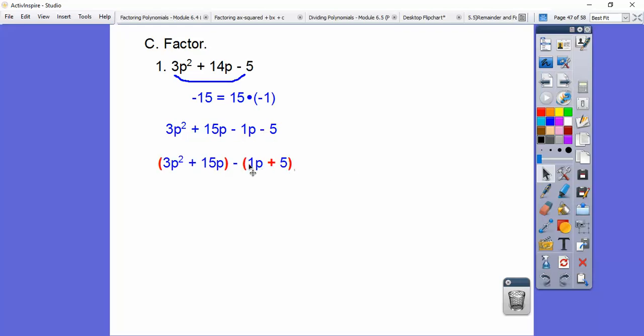So as soon as we put parentheses around here, this minus changed this minus right here to a plus. Imagine if we just redistributed this minus back through, it would take me right back up here. So as soon as you wrap it in parentheses, if that's a minus, it always changes that sign. I can pull a 3p out, we'll be left with p plus 5. Here we can pull a 1 out. And again, we're left with p plus 5, so we can pull that p plus 5 out, and you're left with a 3p minus 1.